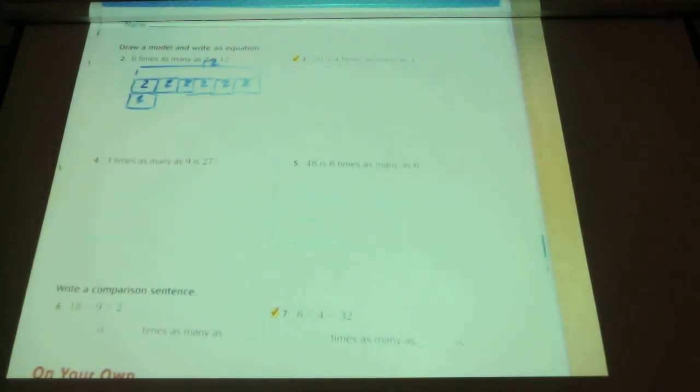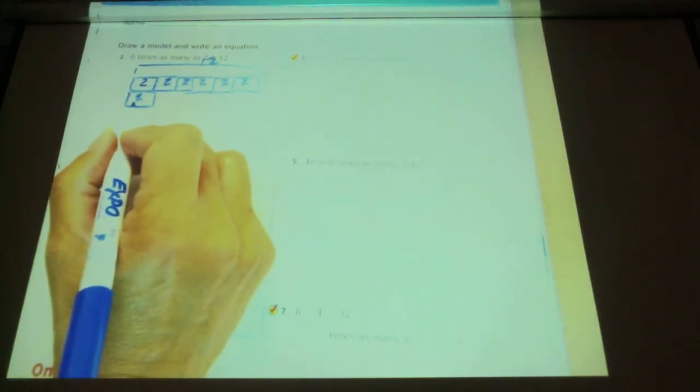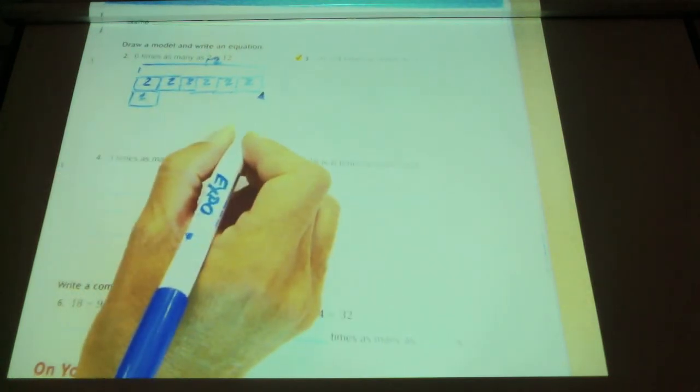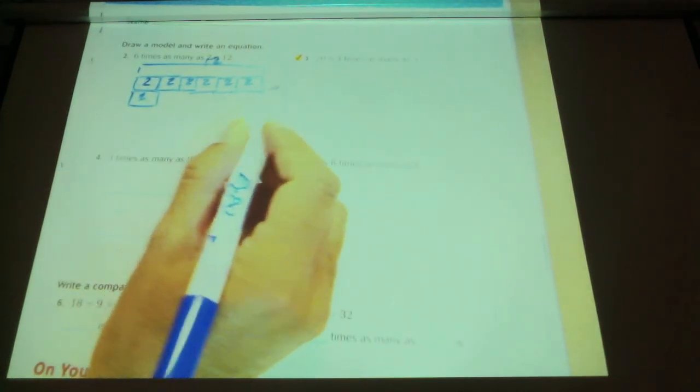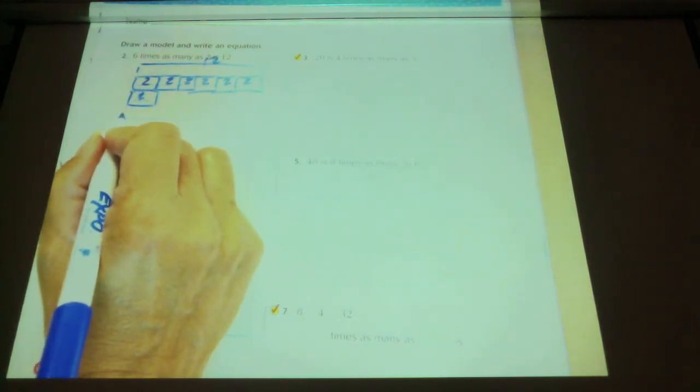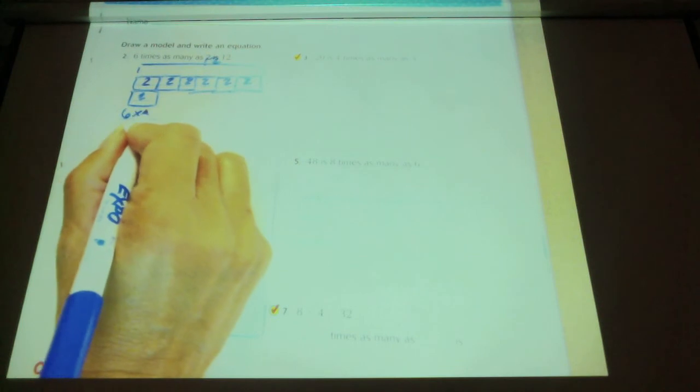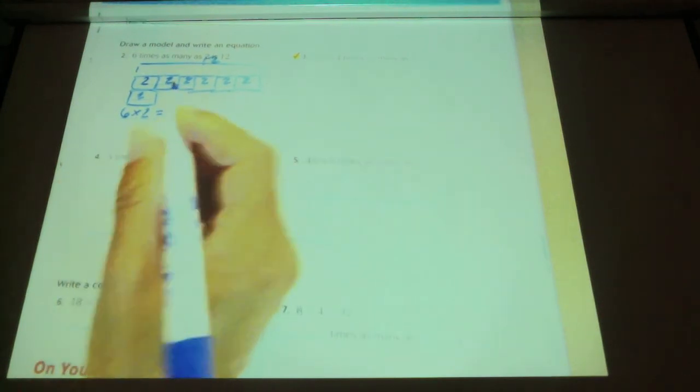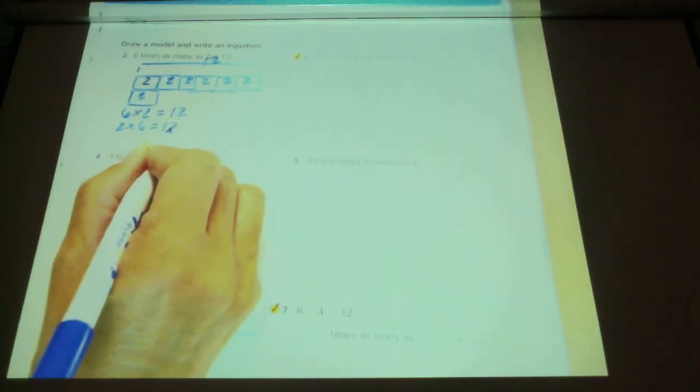Remember, the boxes are the same. So this was, here's a 2, and this is 6 times as many as 2. So my total was 12. So my multiplication problem will be 6 times 2 equals 12. Or 2 times 6. I really don't care what order you write it in.